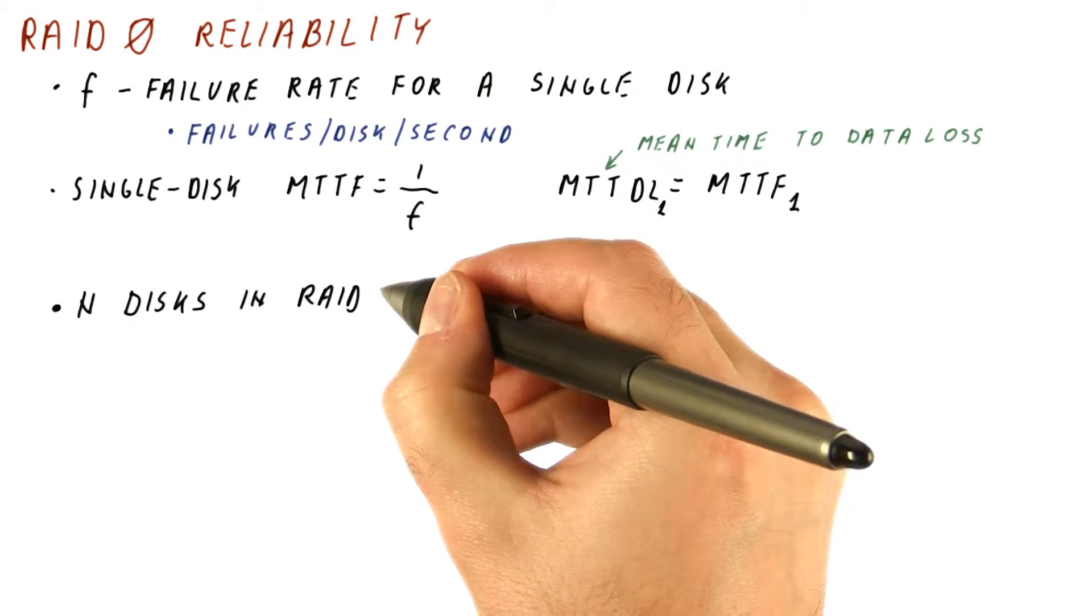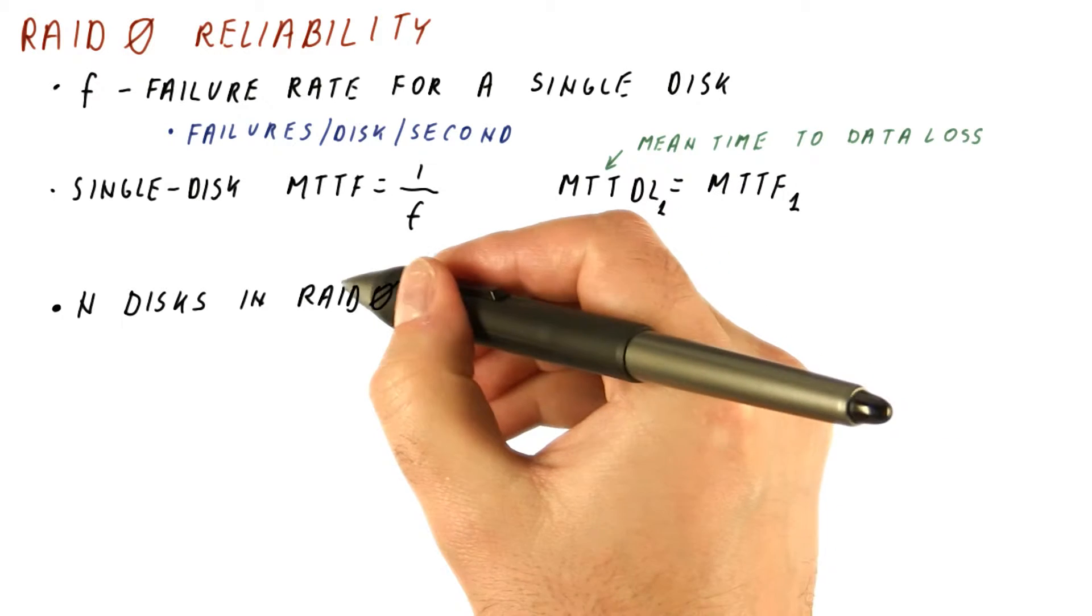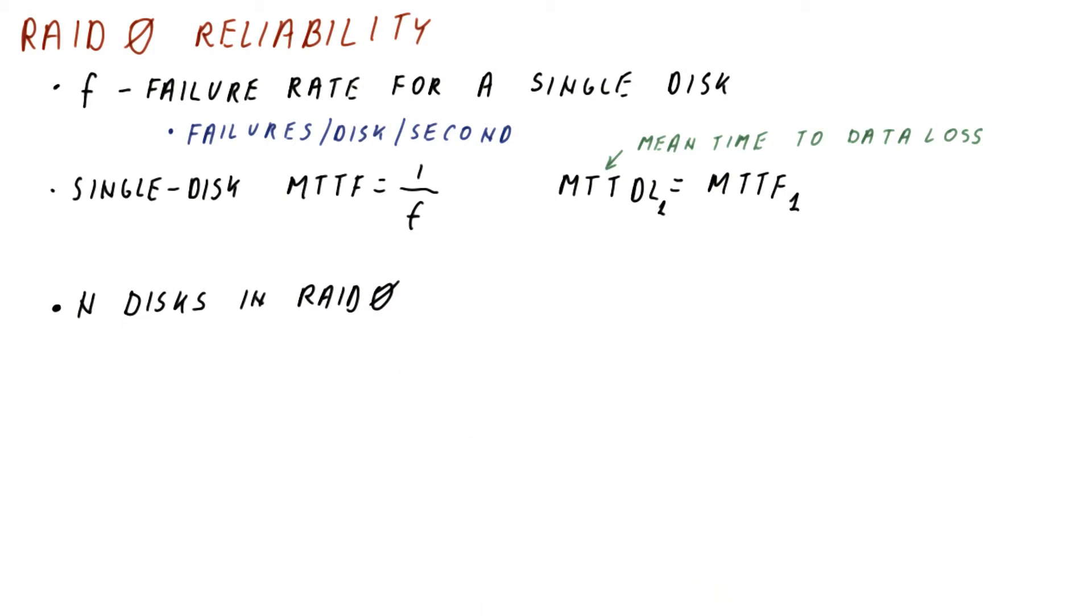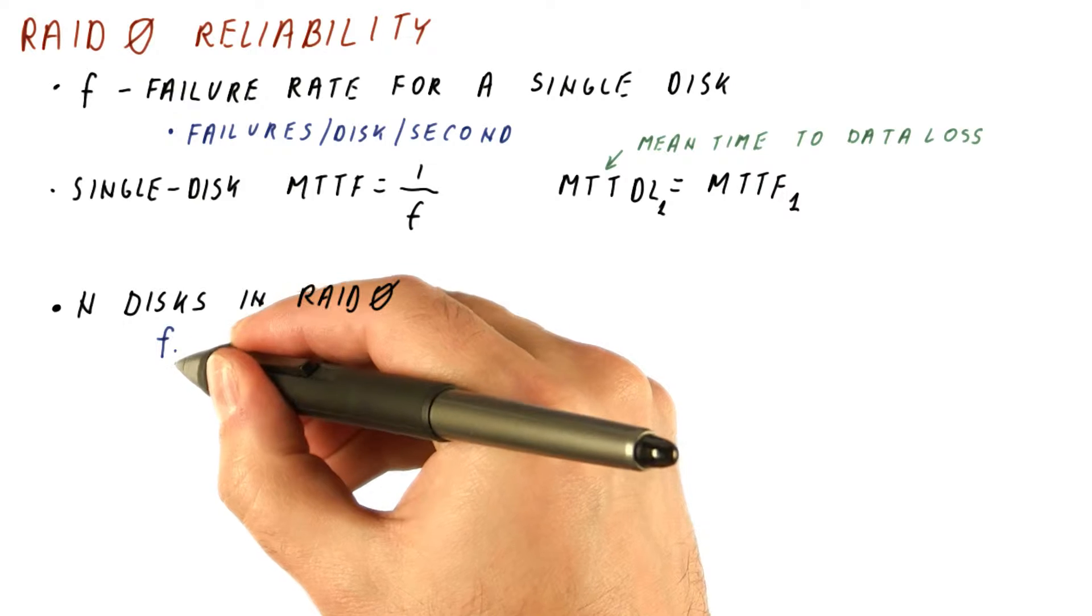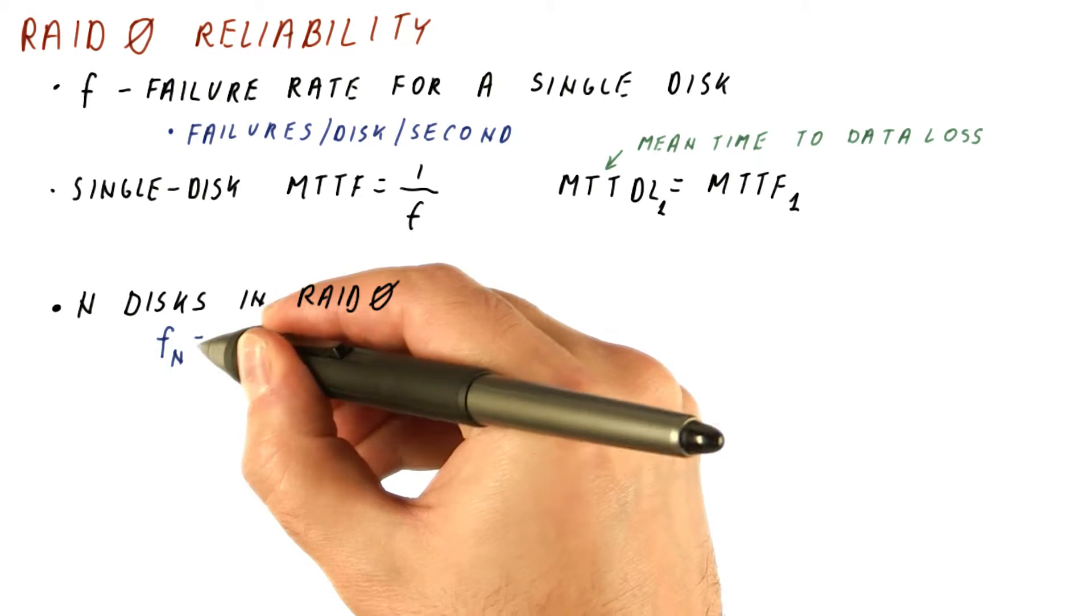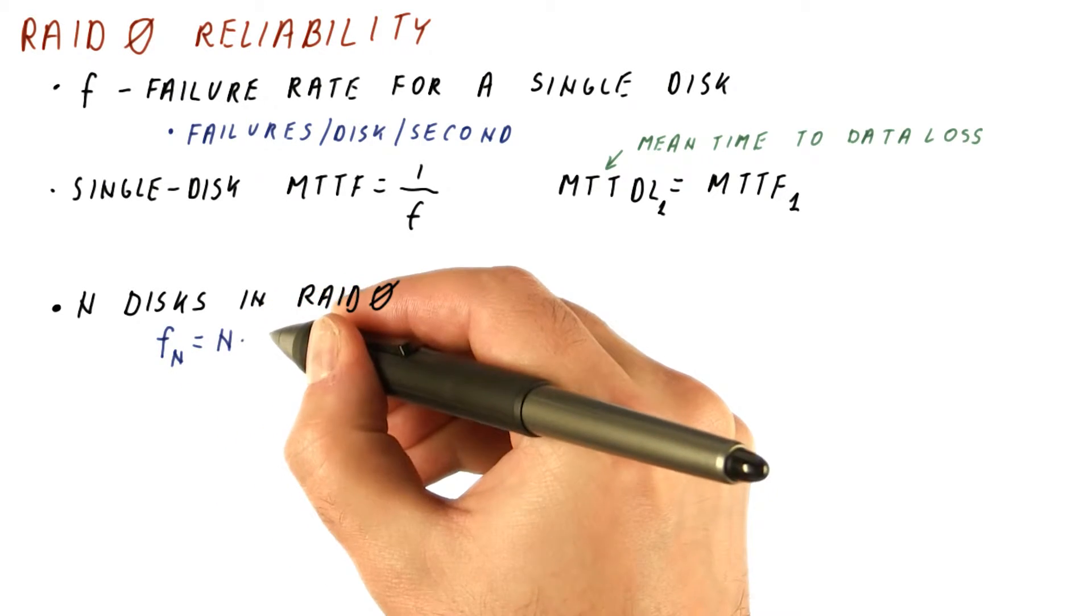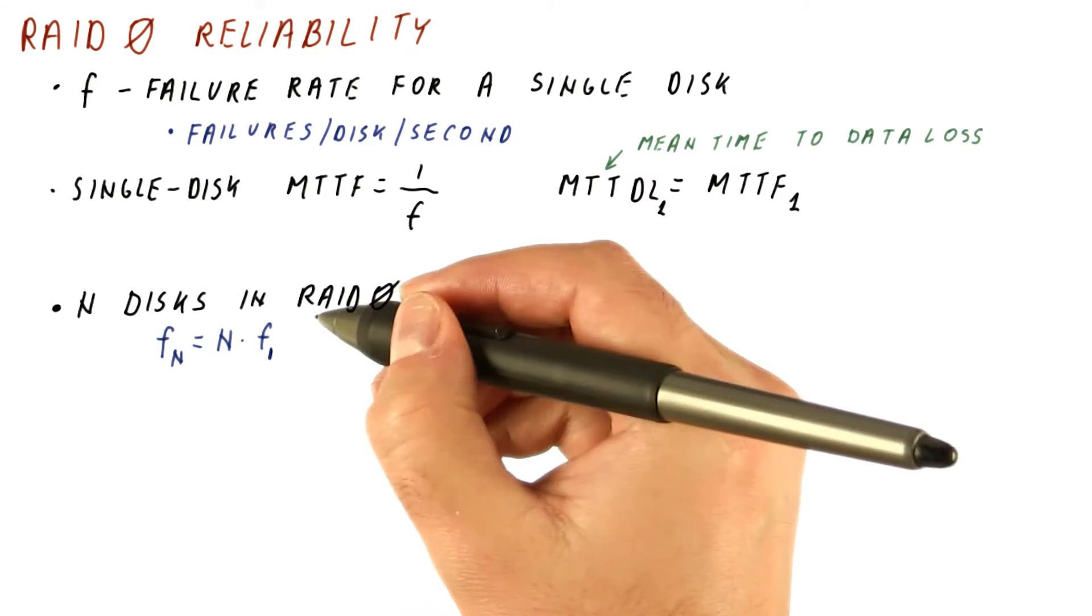Now let's look at what happens when we have n such disks in a RAID 0 configuration. It turns out that the failure rate when we have n working disks is equal to n times the failure rate of one disk.